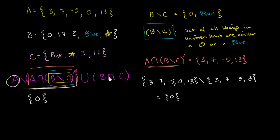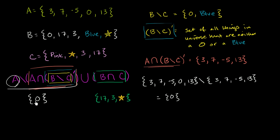Now let's think about what B intersect C is — all the things in both B and C. 0 is not in both. 17 is in both, so we throw in 17. The number 3 is in both. Blue is not in both. The gold star is in both, so we put that in. So B intersect C is {17, 3, ★}. And now we take the union of {0} and B intersect C — and we deserve a drum roll. This is all going to be equal to the set containing 0, 17, 3, and our gold star. And we are done.